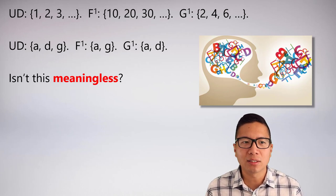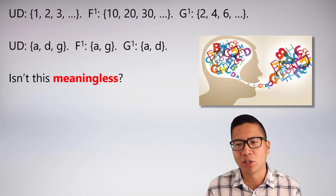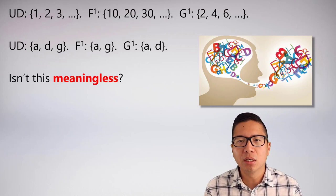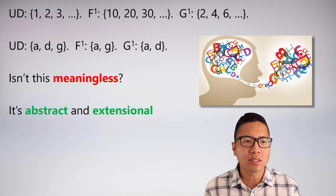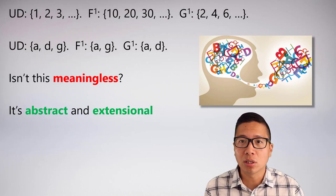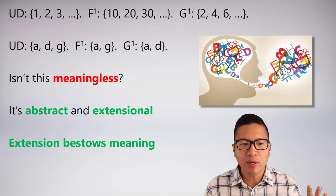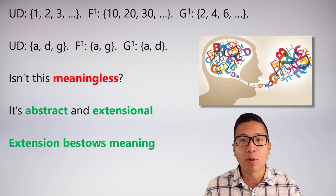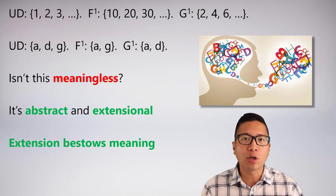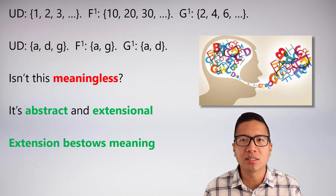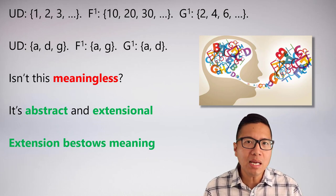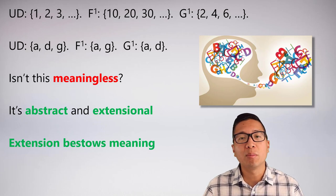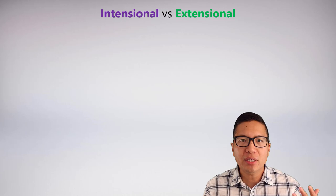What's nice about the last two examples is there's no ambiguity about truth or falsity. With the abstract letters a, d, g, we don't even know what these things mean, and it doesn't matter — because extensionally I've defined the UD, F, and G, and I can assess truth easily. You might object that this is meaningless, but extension does bestow meaning. And remember our simplification: if I capture meaning extensionally, I could also have done it intentionally and arrived at the same concept.